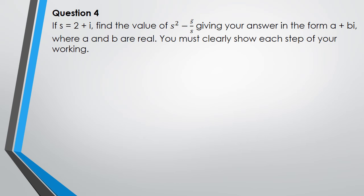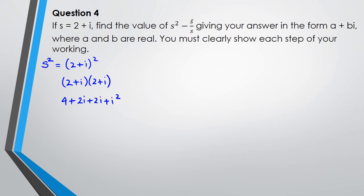Question 4: if s equals 2 plus i, find the value of s-squared minus the conjugate of s, divided by s. The question says you must clearly show each step. First I work out s-squared: (2 plus i) squared equals (2 plus i)(2 plus i) equals 4 plus 2i plus 2i plus i-squared. Since i-squared equals negative 1, s-squared equals 3 plus 4i.